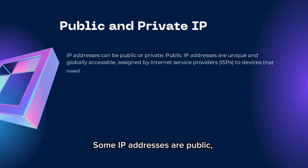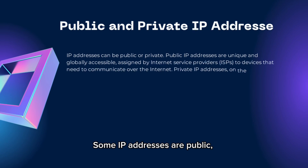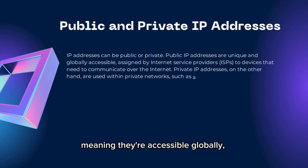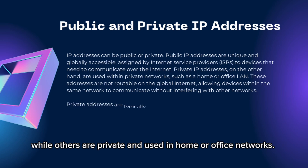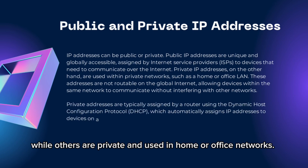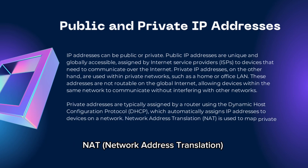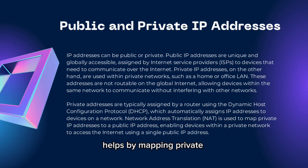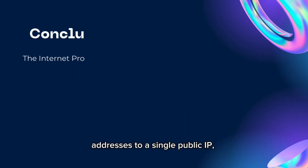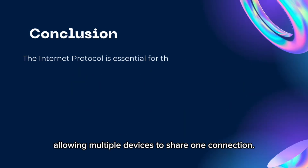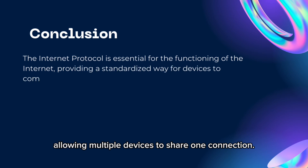Some IP addresses are public, meaning they're accessible globally, while others are private and used in home or office networks. NAT, or network address translation, helps by mapping private addresses to a single public IP, allowing multiple devices to share one connection.